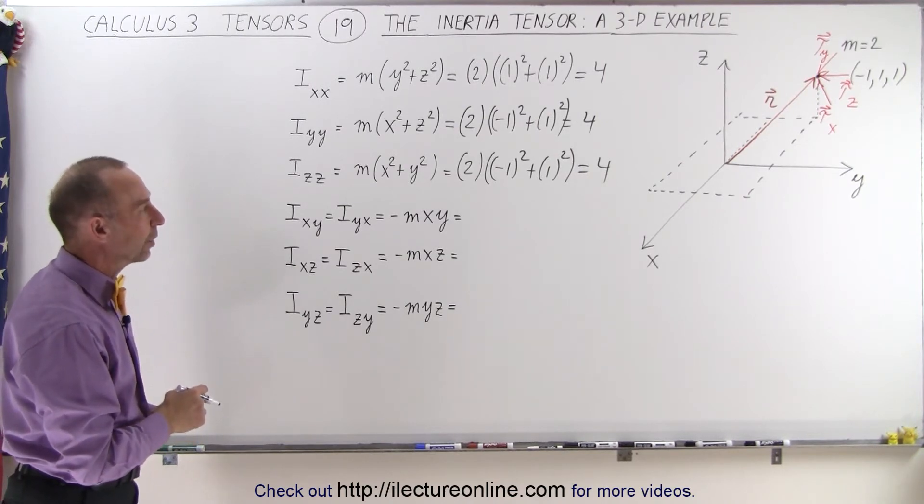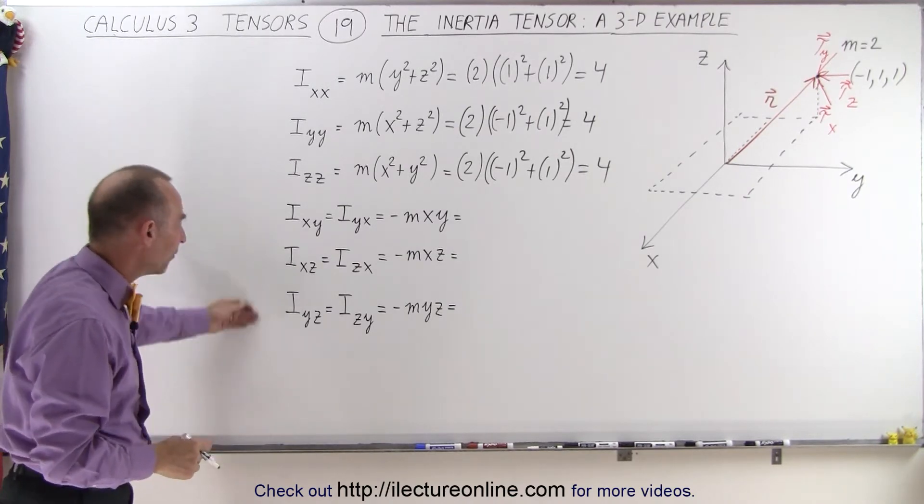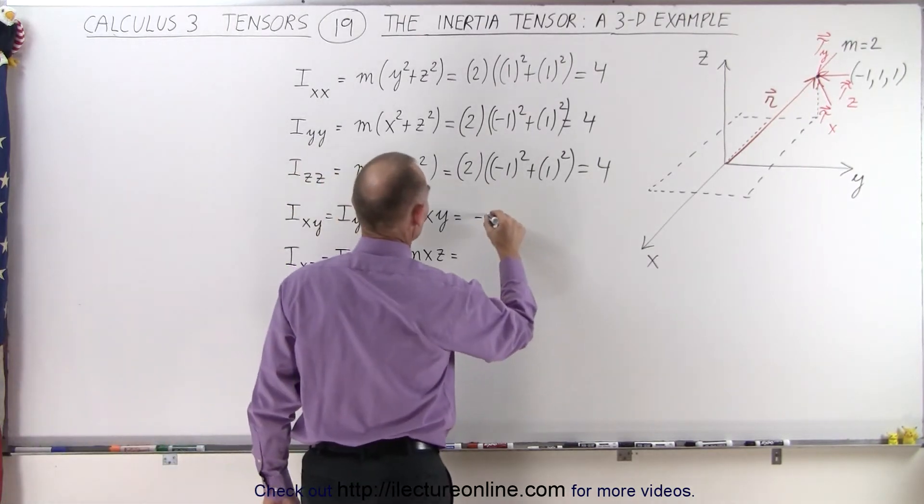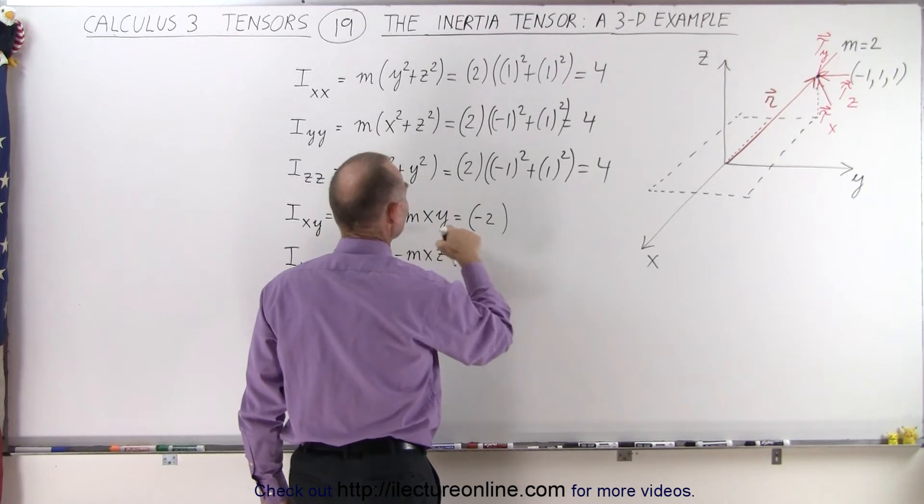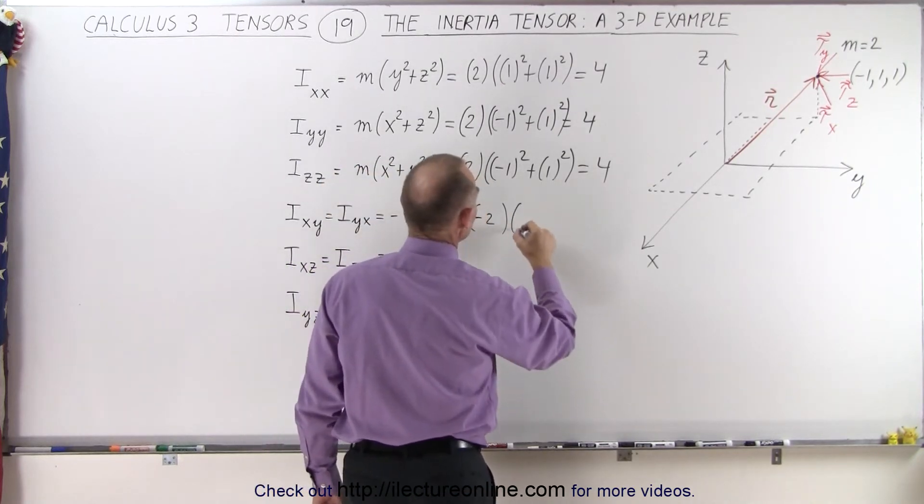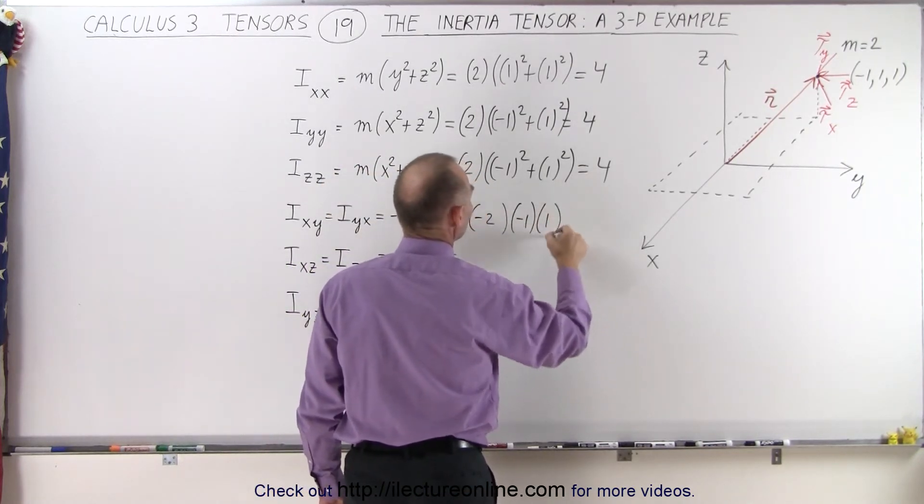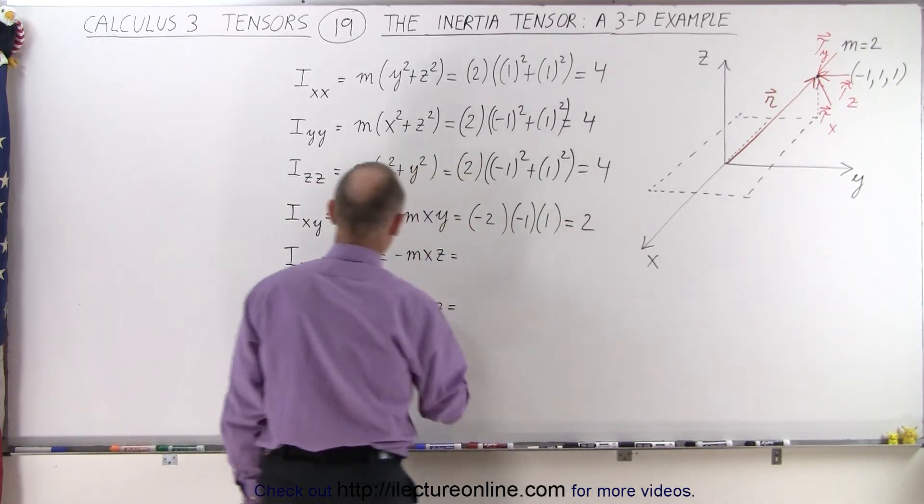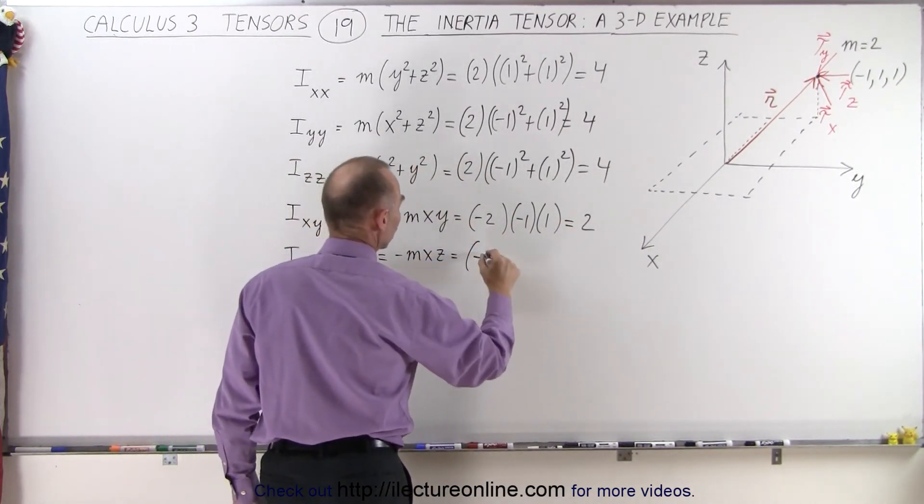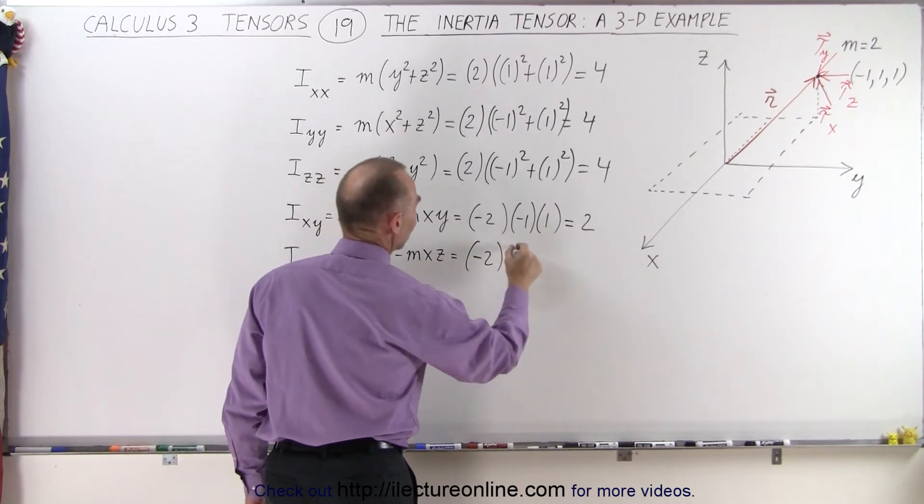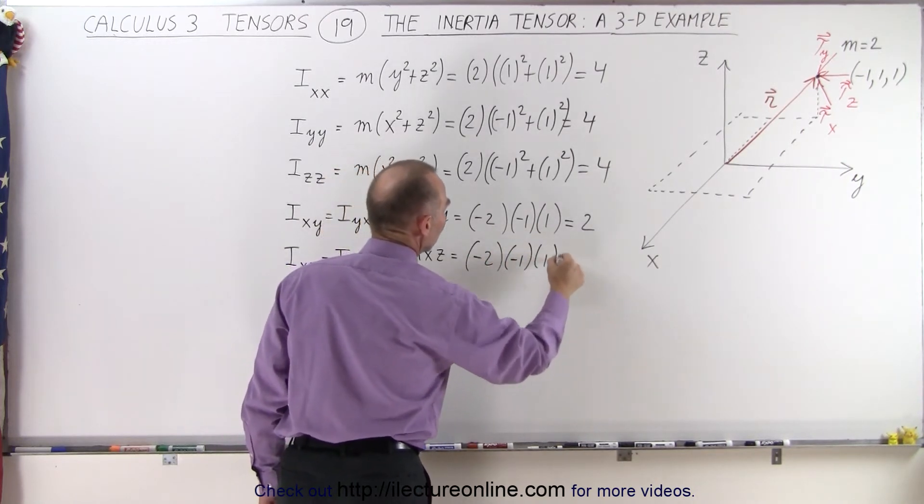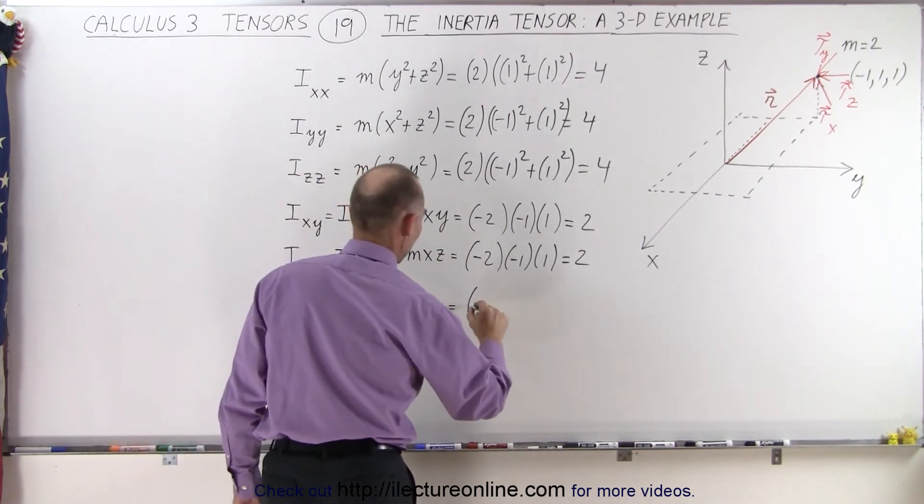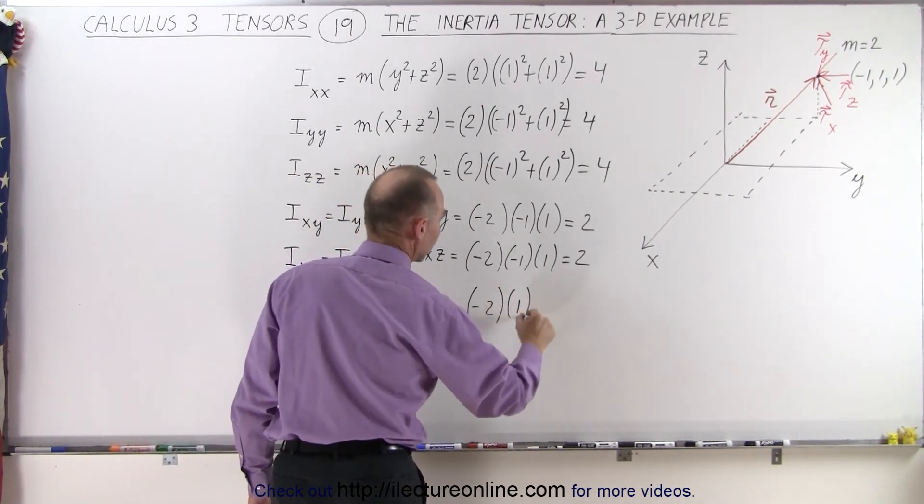Let's see now, what does that mean for the off-diagonal elements? Let's calculate and see what they are. So we have minus 2 times x times y. Now, x is a negative 1, y is a positive 1. Negative times negative cancels out, so that leaves us with a 2. Over here, we have minus 2 times x times z, which is minus 1 times 1, which is also positive 2. And here we have minus 2 times 1 times 1, which is a minus 2.